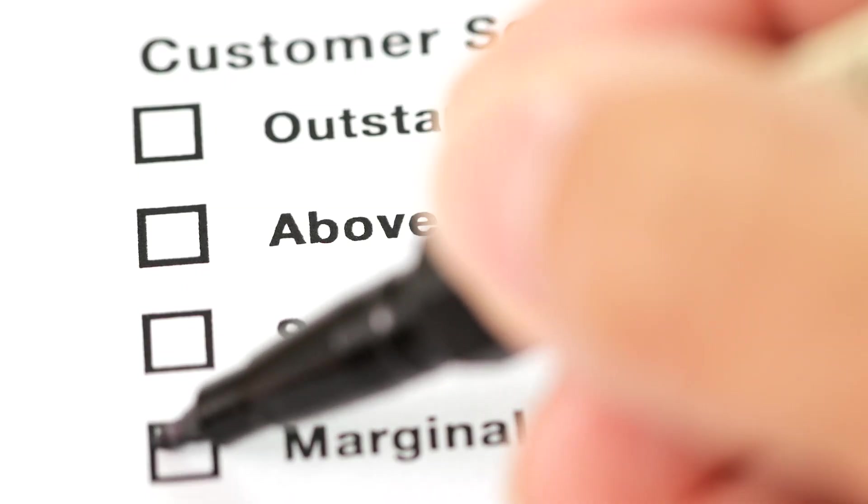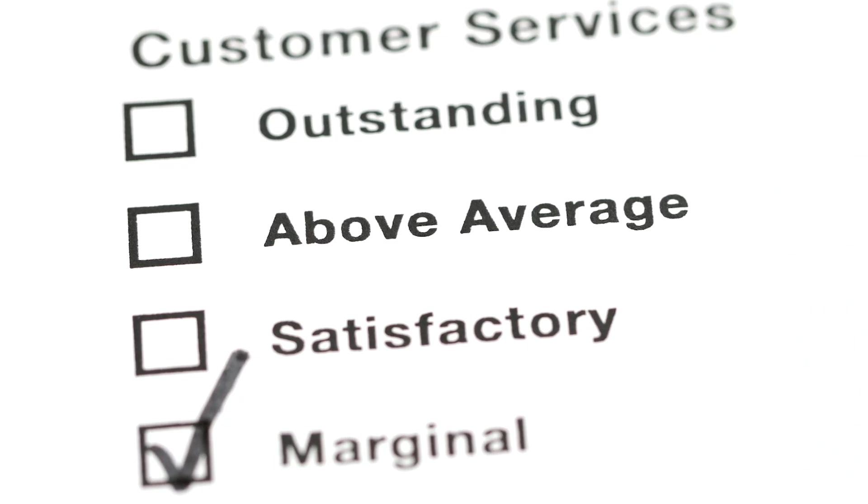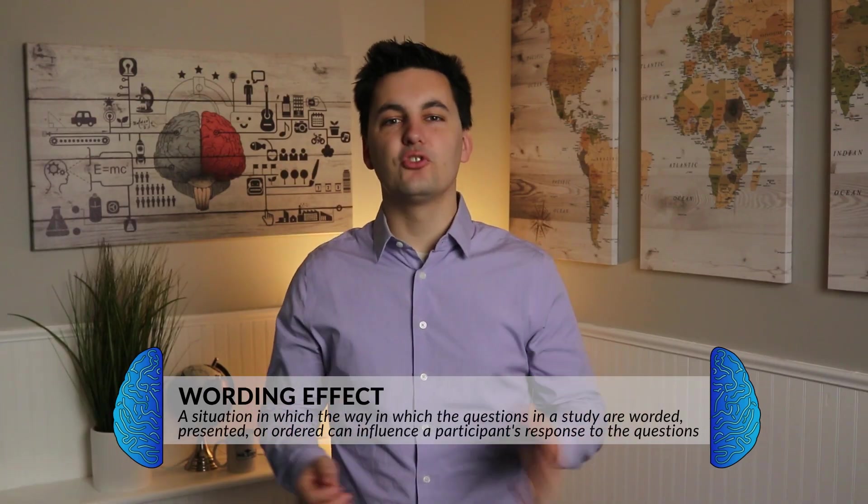Surveys can be excellent tools for gathering lots of data very quickly. They're often used for sensitive topics where participants may feel uncomfortable answering questions without anonymity. Where surveys can get tricky is with the wording. Surveys can have misleading questions that impact how participants respond — this is known as the wording effect. For example, people are more receptive to 'aid for the needy' than to 'welfare,' and how we word questions impacts the answers participants give.